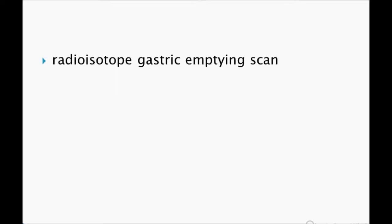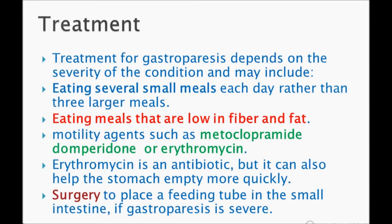An important point before treatment: if a patient with diabetes presents with signs and symptoms of gastroparesis, you should investigate first rather than going straight to treatment, because a gastric outlet obstruction can also present with the same symptoms. You need to rule that out — either with barium studies or scans. Barium study is the best to rule out gastric outlet obstruction.